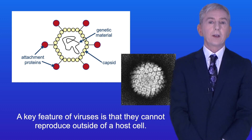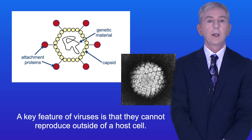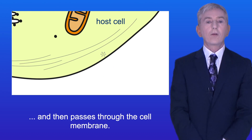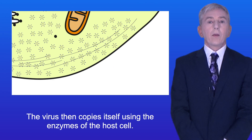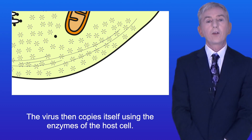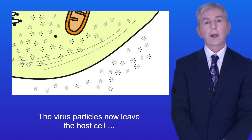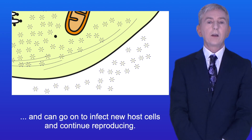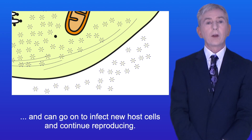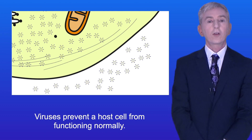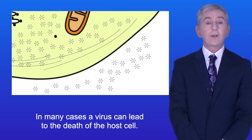A key feature of viruses is that they cannot reproduce outside of a host cell. To reproduce, a virus attaches to the host cell and then passes through the cell membrane. The virus then copies itself using the enzymes of the host cell. The virus particles now leave the host cell and can go on to infect new host cells and continue reproducing. Viruses prevent a host cell from functioning normally, and in many cases a virus can lead to the death of the host cell.